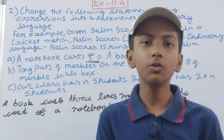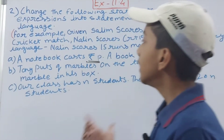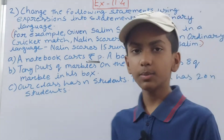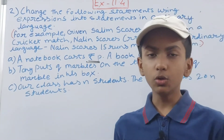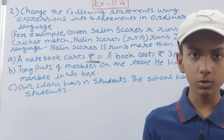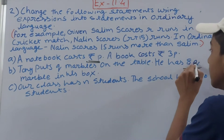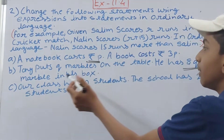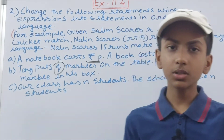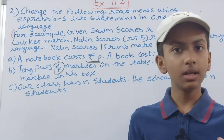Part B: Tony puts q marbles on the table and has 8q marbles in his box. Tony has put q marbles on the table, and the number of marbles in his box is 8q. 8q means eight times the marbles on the table, because q marbles are on the table and 8q is eight times that number.